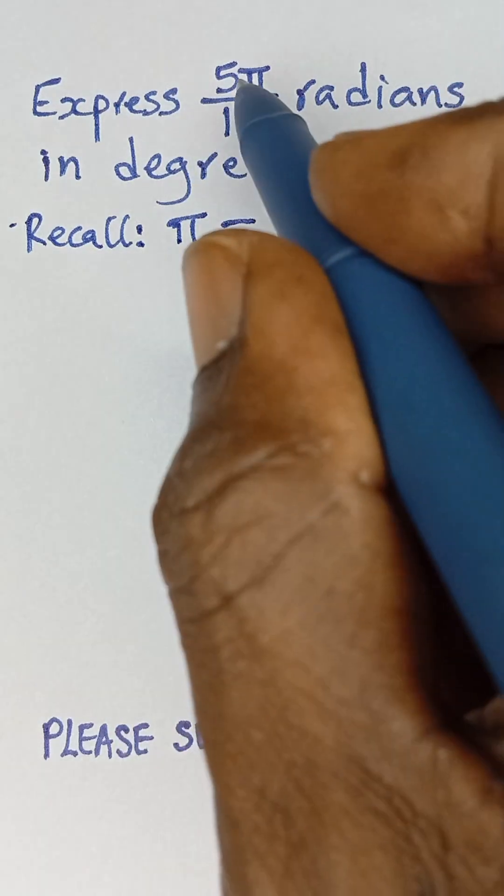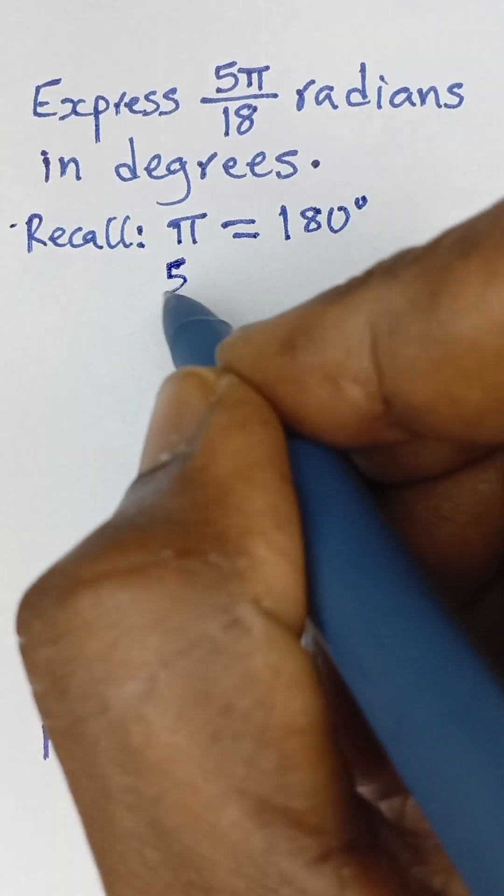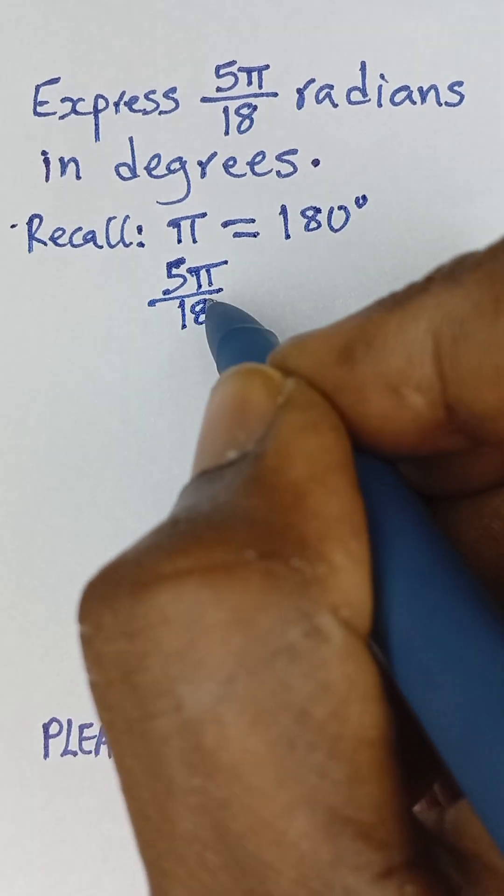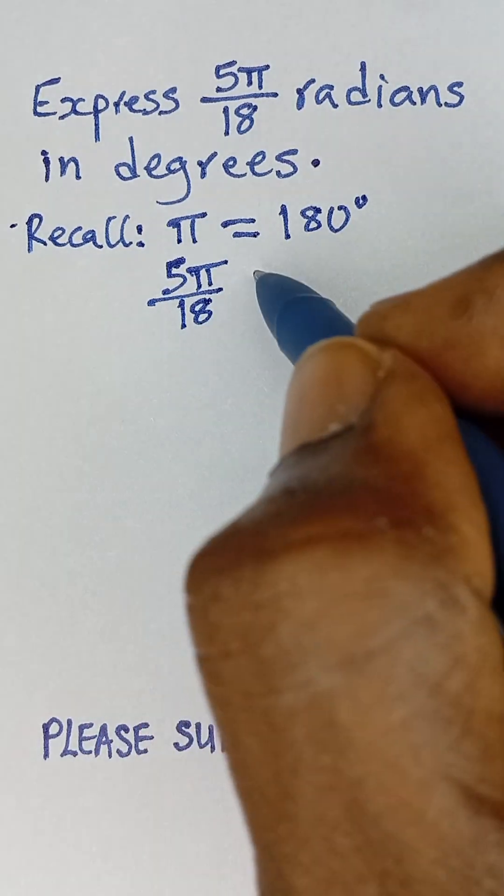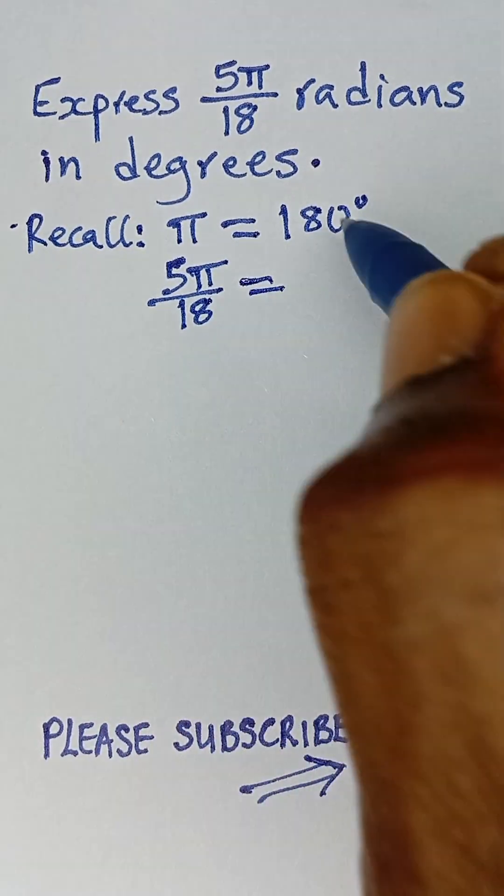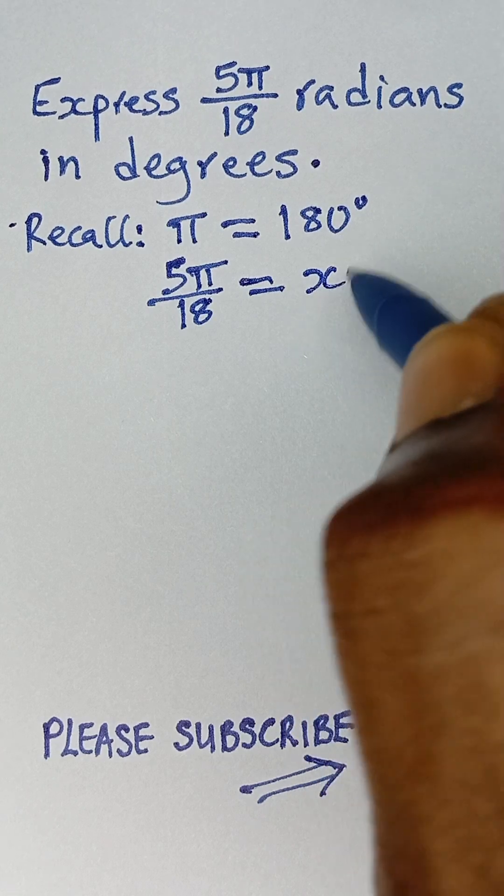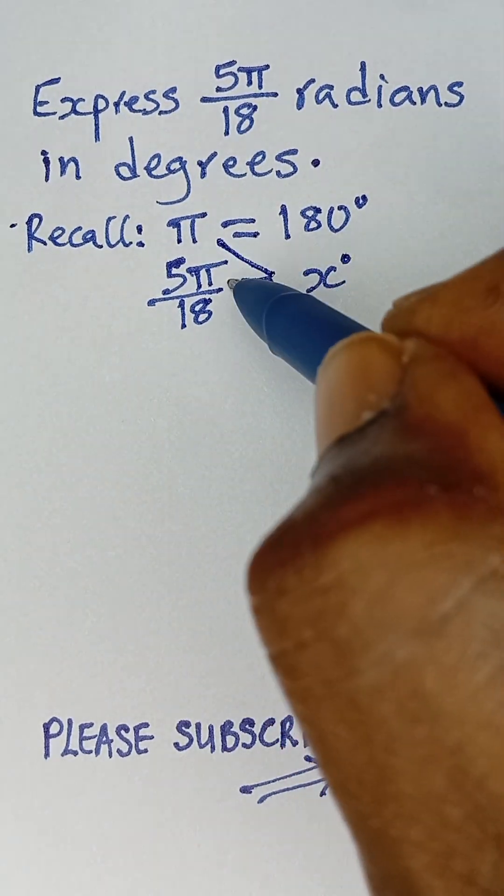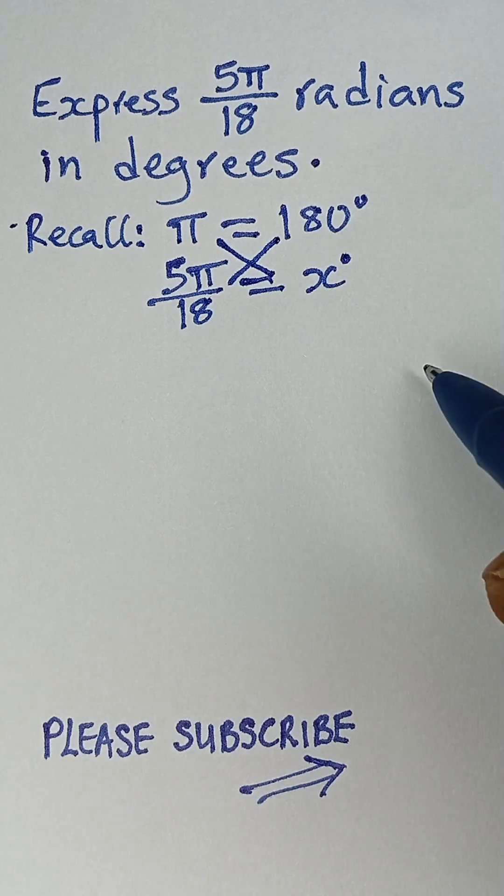So to find 5π over 18 radians, it will be equal to x degrees, where we don't know the value. What do we do here? We simply cross multiply using the proportion method.